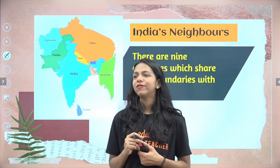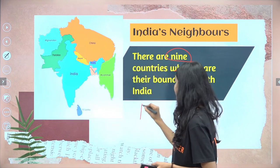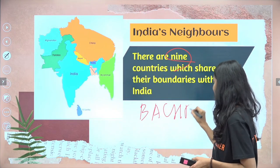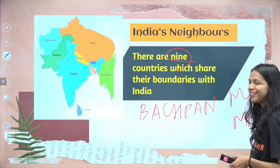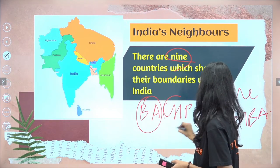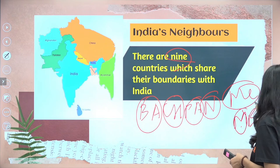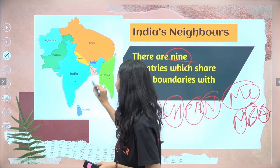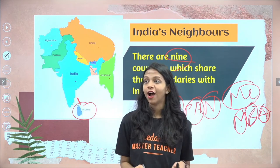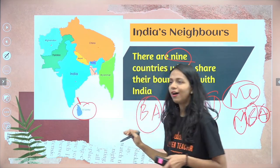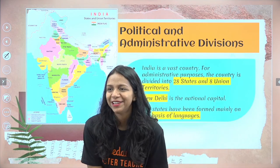India's neighbors: we share our boundaries with 9 countries. You have Bangladesh, China, Pakistan, Nepal, Myanmar, Bhutan, Afghanistan, and Sri Lanka. Maldives also comes into the list. You can use the mnemonic MBA Bajpan to remember them.